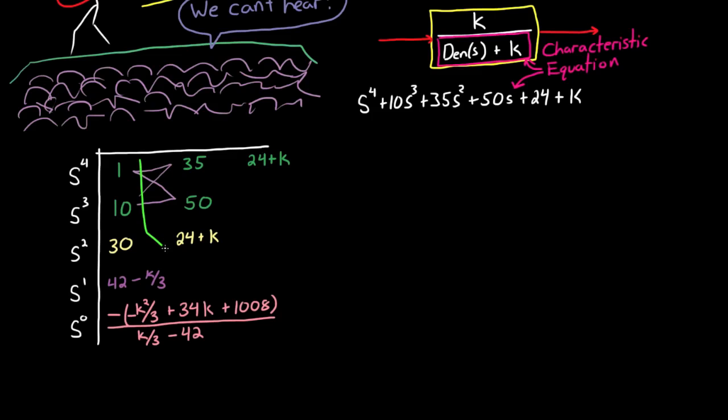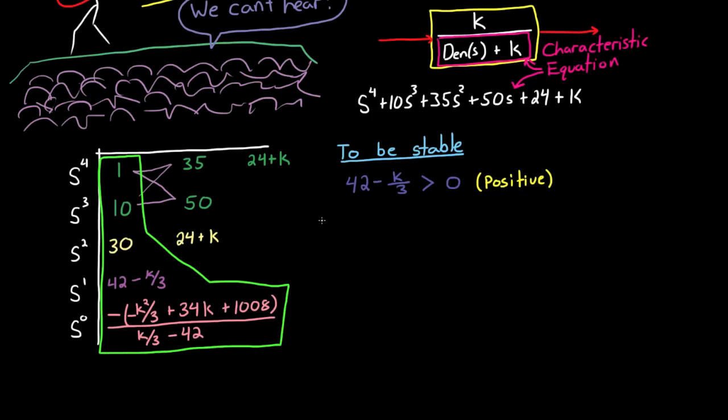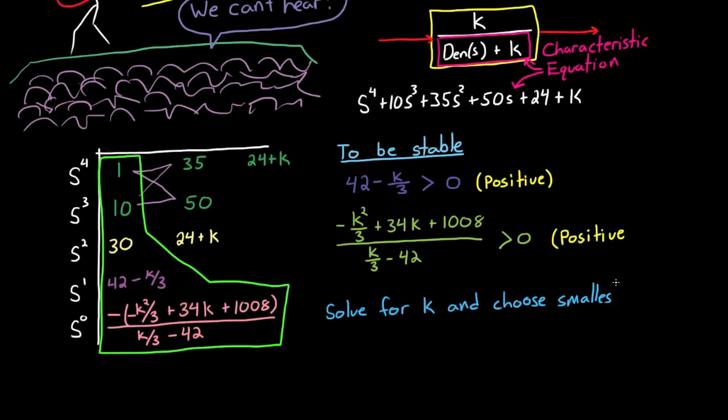Now at this point we can count the number of roots in the right half plane, just as before, by counting the number of sign changes in the first column. And you can see that the first three entries are all positive, which means that in order to have a stable system, we need to choose k such that the next two entries are also positive. This will ensure that there are no sign changes in that first column. And it's pretty easy to see what values of k would make the first equation positive, and probably not as easy for the second. But you can solve both equations and choose the smallest positive value of k that satisfies both of them, which in this case k must be less than 126.